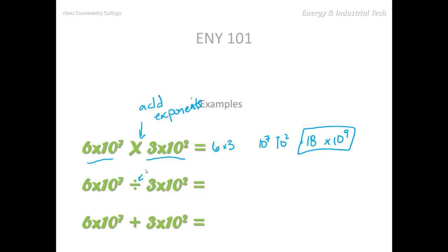For division, can you guess what we do? We subtract our exponents. So I leave it to you to confirm that six times ten to the seven divided by three times ten to the two would equal two times ten to the five.